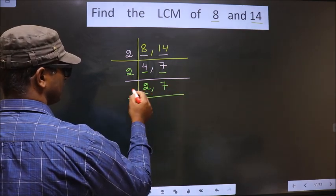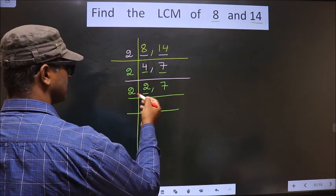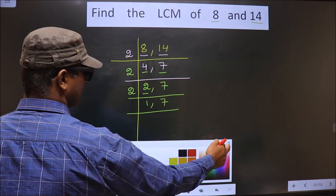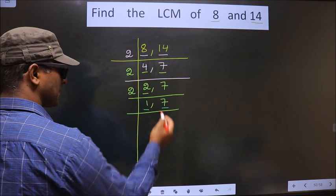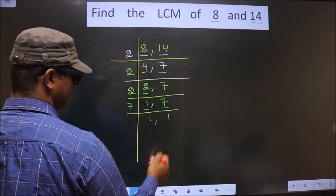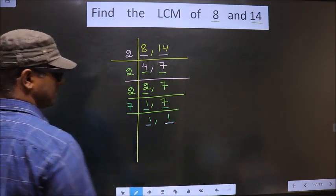Here we have 2. 2 is a prime number so we take 2 1s 2. 7 is not divisible by 2 so you write down 7 as it is. Now here we got 1 so focus on the next number that is 7. 7 is a prime number so we take 7 1s 7. Now we got 1 in both the places.